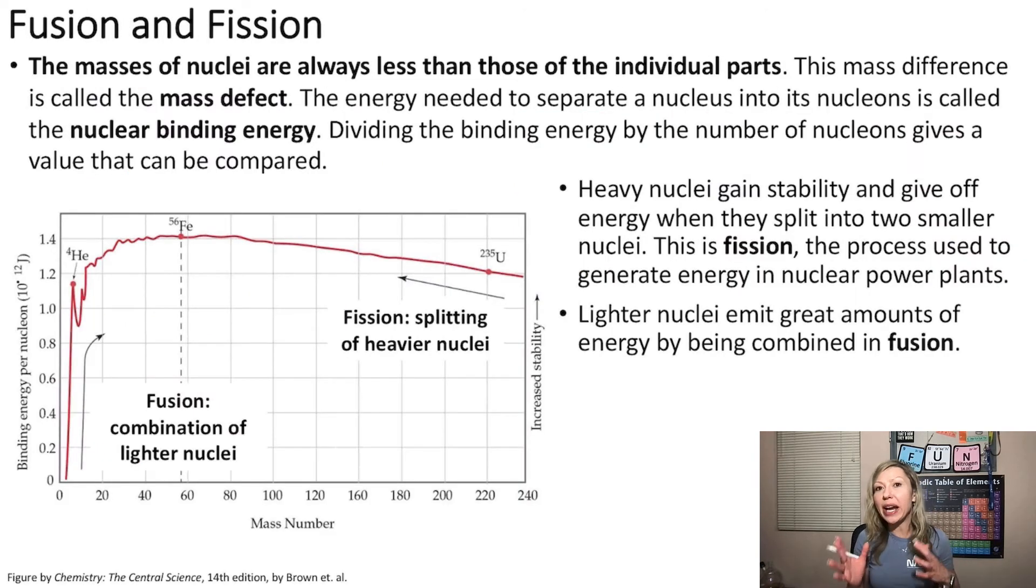Now, there is one more thing that I want to talk to you about in this video, and this is concerning the so-called mass defect. So the masses of nuclei are always less than those of the individual parts. So what does this mean? This means that if I take a helium nucleus, which contains two protons and two neutrons, and I weigh out the protons and the neutrons separately, and add together the masses, I'm going to get a larger volume for the mass compared to the nucleus of a helium atom.